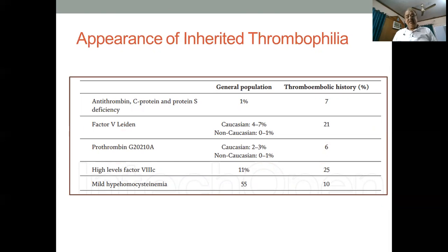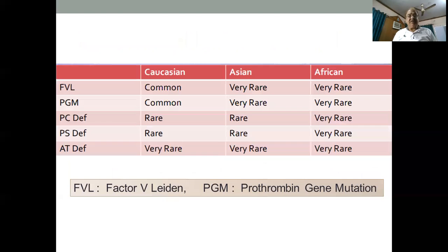Looking at inherited thrombophilia prevalence in a general population versus patients who had DVT: antithrombin, protein C, and protein S deficiency is one percent in the general population, but around seven percent in those with a history of DVT. Factor V Leiden is around 21 percent in DVT patients. Prothrombin mutation in six percent. High levels of factor 8C in 25 percent. Hyperhomocysteinemia is more common in the general population compared to the thromboembolic population. Overall, factor V Leiden, prothrombin gene mutation, protein C, protein S, and antithrombin deficiency are quite rare in the Asian population and even much rarer in the African population.